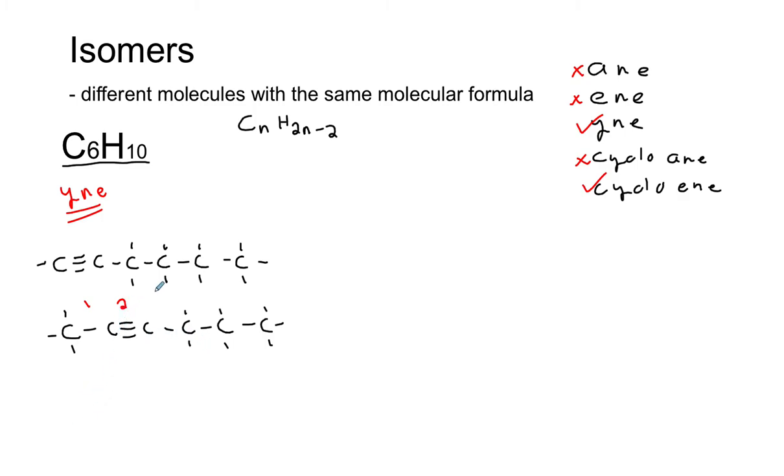If I move over one more and think if that's a unique structure, it is. I could have a hex-three-ine. [Counting: 2, 3, 4, 5, 6] First bond, second bond. There's the third bond. I'll make a triple.